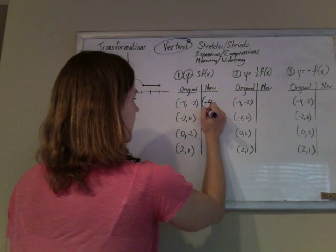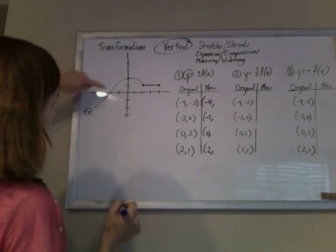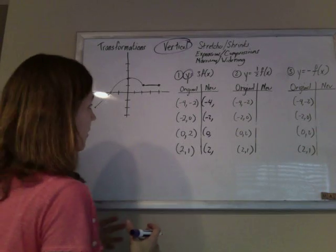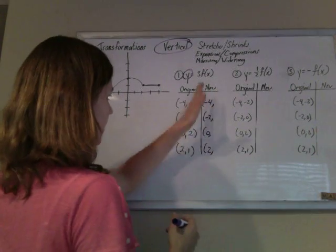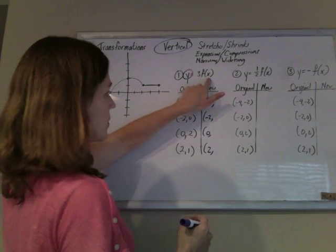And what I've already done here is I've written all the key points that will help me guide my graph. So when I'm doing something with a vertical change, all the x values are going to stay the same. And then here the y is 3 times what it used to be.